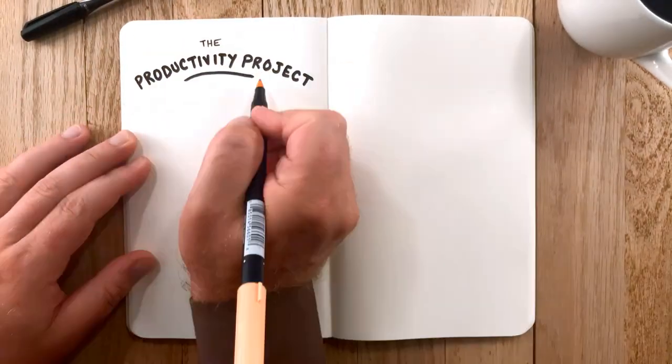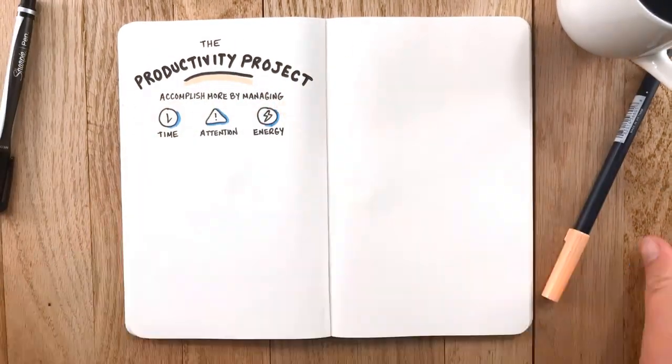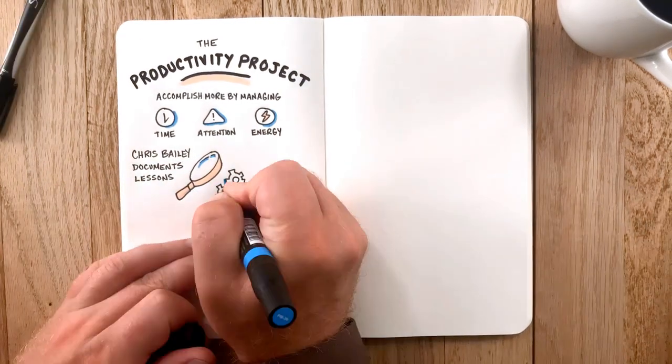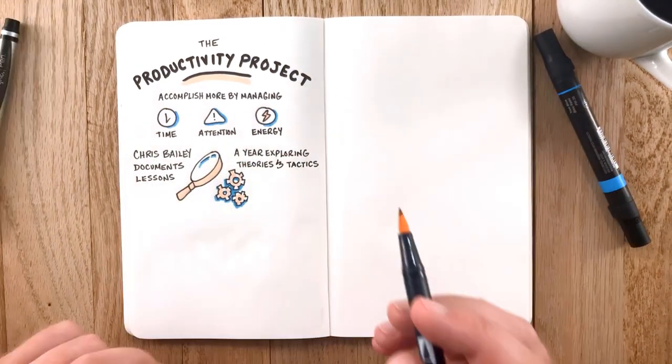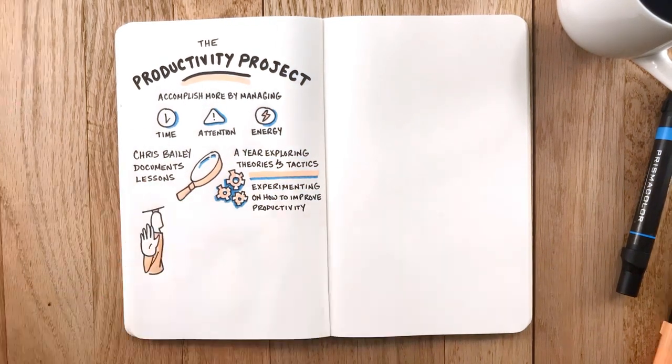In The Productivity Project: Accomplishing More by Managing Your Time, Attention, and Energy, Chris Bailey documents his lessons from spending a year exploring theories and tactics and experimenting on how to improve productivity. After graduation, Chris turns down two well-paying jobs to run experiments on himself.